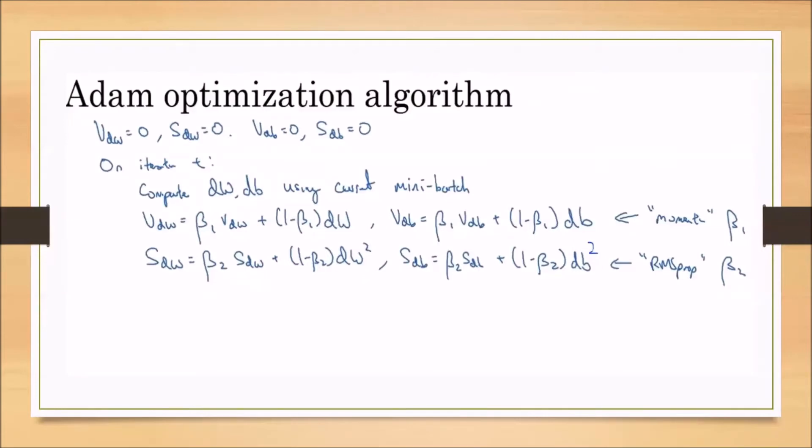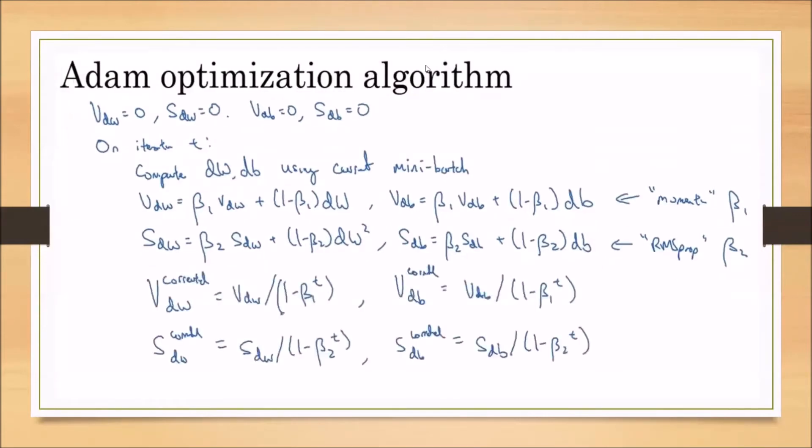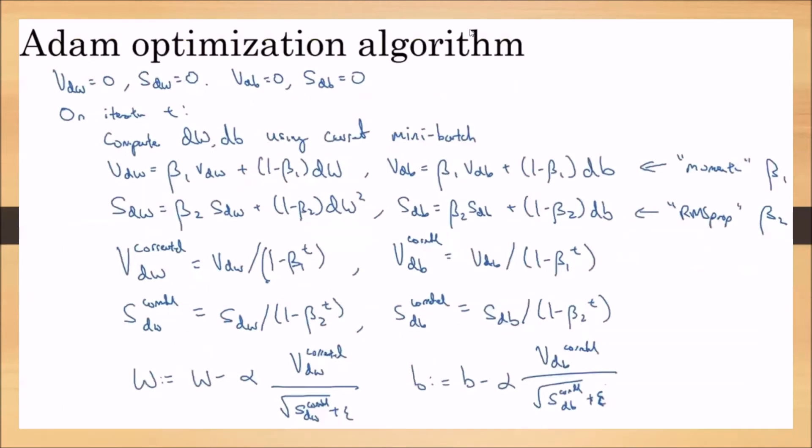Now we're applying the bias correction that we learned previously for RMS propagation and gradient descent with momentum. VDW corrected equals VDW divided by one minus beta one. SDW corrected equals SDW divided by one minus beta two. The bias correction gives us an additional chance in the initial stages for proper values.